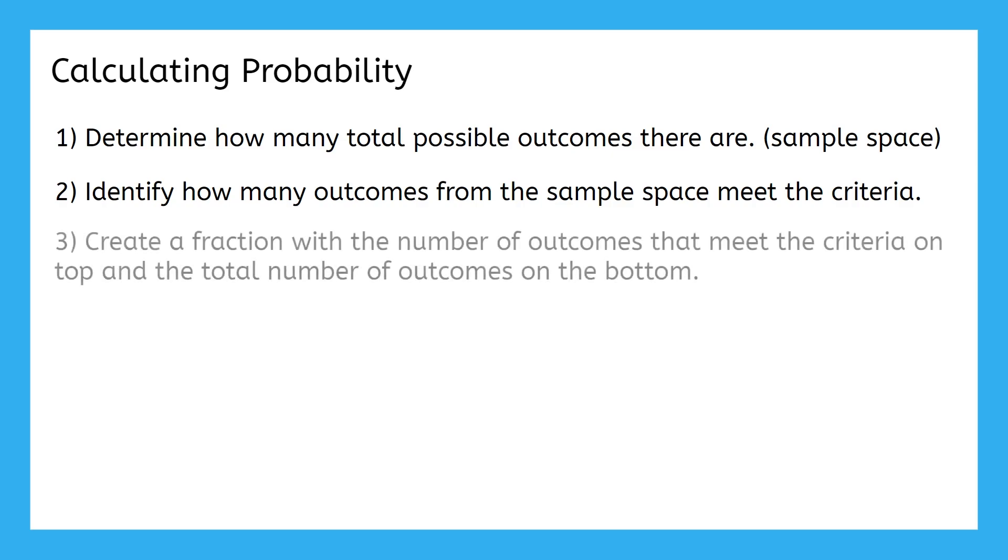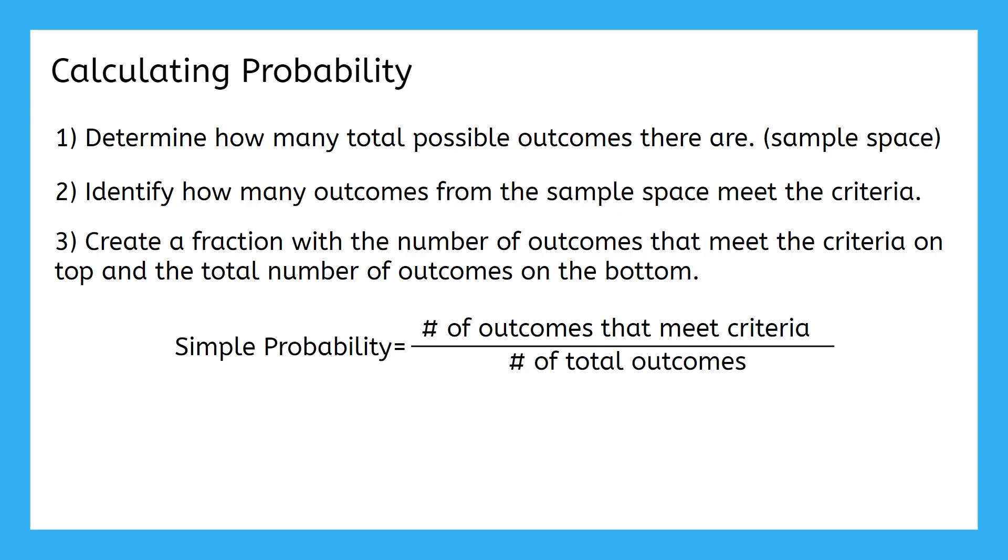Lastly, we turned those two numbers into a fraction where we put the number of outcomes that meet the criteria on top and the total number of all possible outcomes on the bottom. This right here is the formula for simple probability. I want to point out that this is just one way to represent this formula. You might find this formula shortened in ways like desired over total, or even using symbols like a happy face for outcomes that meet the criteria and a t for the total. Make sure that however you write this in your notes is a way that will work best for you when you go back to reference it later.